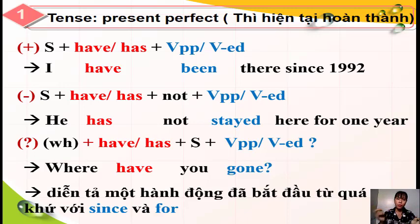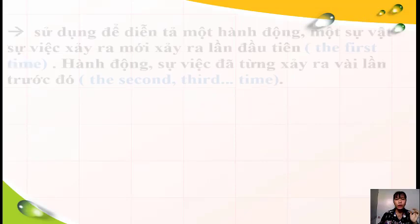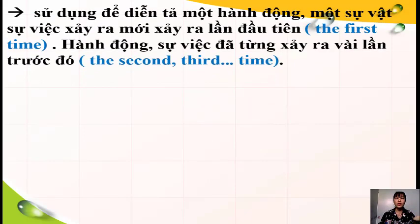Đây là những thứ mà các em đã được học ở bài số 9. Vậy trong bài 11 chúng ta sẽ được học thêm cách dùng của thì hiện tại hoàn thành. Đó là sử dụng để diễn tả một hành động, một sự việc vừa mới xảy ra lần đầu tiên - từ nhận biết là 'the first time'. Hoặc một sự việc đã xảy ra vài lần trước đó - từ nhận biết là 'the second time' hoặc 'the third time'.